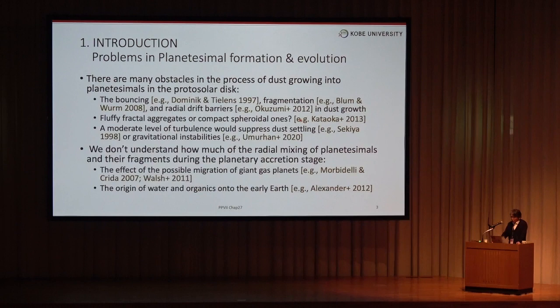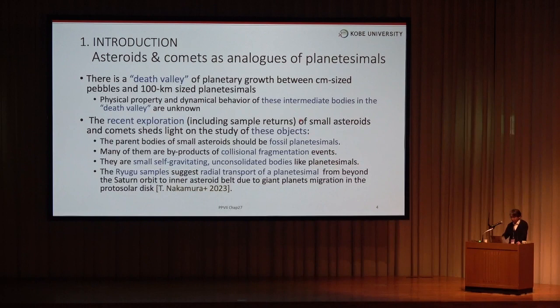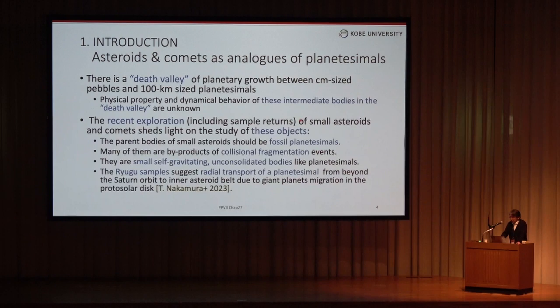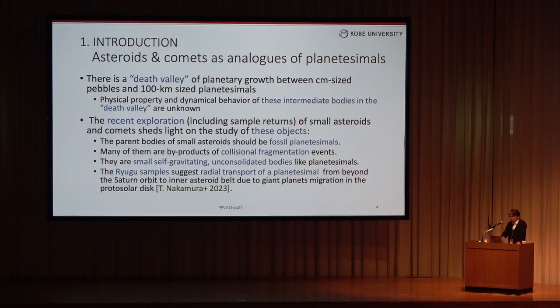The second problem is that we don't understand how much radial mixing of the primordial streamers occurred during the planetary accretion stage. What was the effect of the possible migration of giant gas planets? And how did the radial mixing influence the origin of water and organics onto the early Earth? The clues to solve these problems may be found in small asteroids and comets. The recent exploration, including return samples from small asteroids and comets, shed light on the study of these objects in the death barrier.